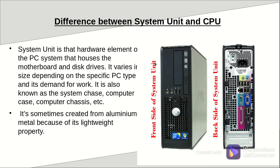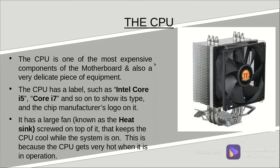The CPU is the most expensive and most delicate piece of equipment found on the motherboard. As you can see from the image on your screen, it is mounted on the motherboard and labeled using the company name — for example, the most common ones you would see are from Intel, with labels like Core i5 and Core i7. What you are seeing on the screen now is the top part of the CPU, on which a large fan is mounted — the fan is also mounted onto a material called a heat sink.